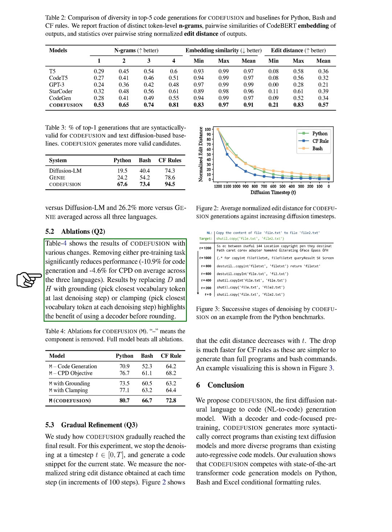Removing either pre-training task significantly reduces performance: by 10.9% for code generation and 4.6% for CPD, averaged across the three languages.